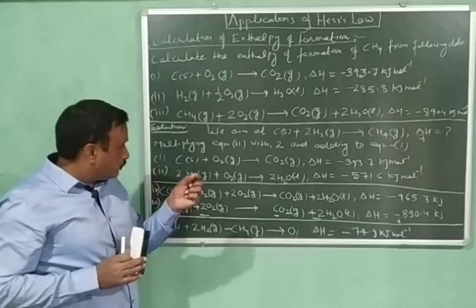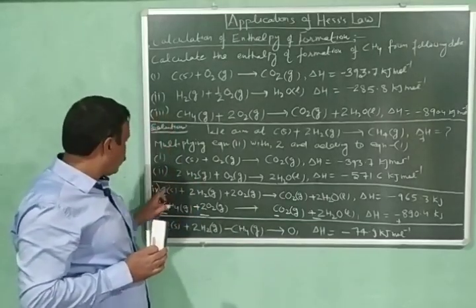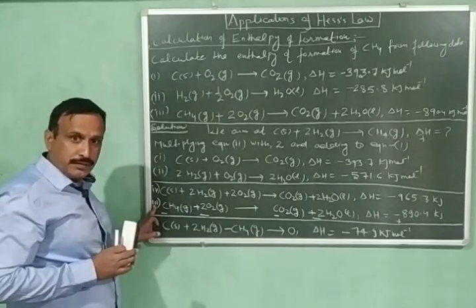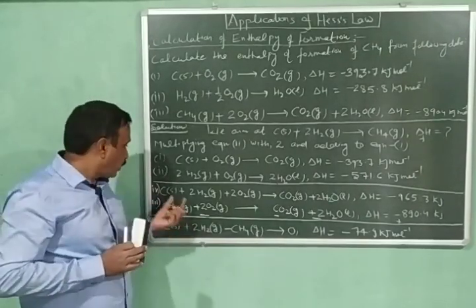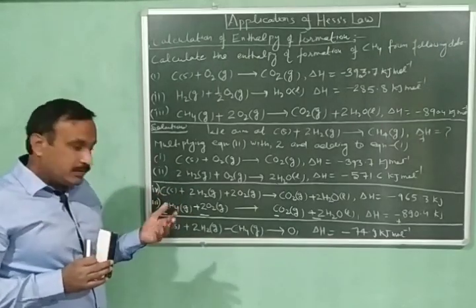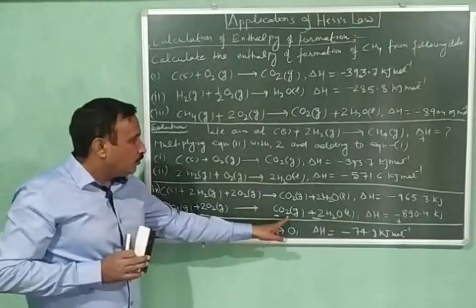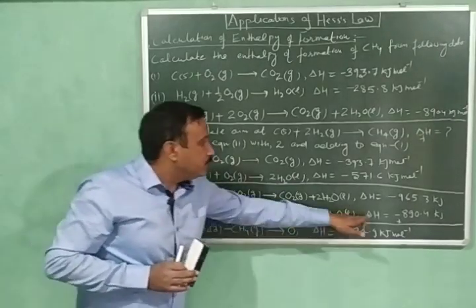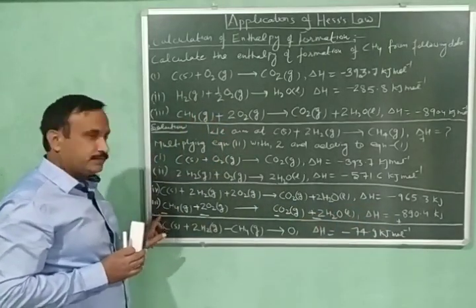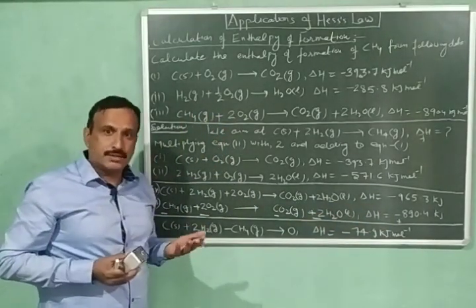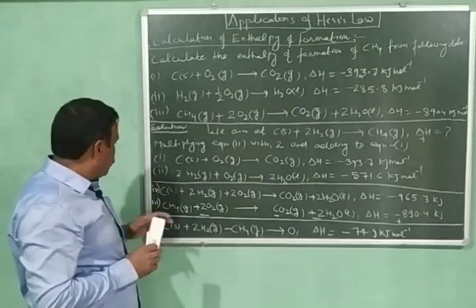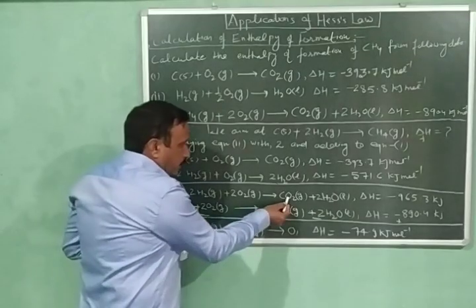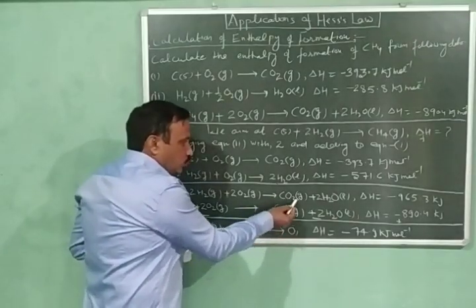Now we will subtract equation number three from equation number four. I have written equation number three again, and for the subtraction, I have changed the signs of the reactants, products, and also the enthalpy change of equation number three, because this is required for subtraction. When we subtract equation number three from equation number four, we get CO₂ minus CO₂.